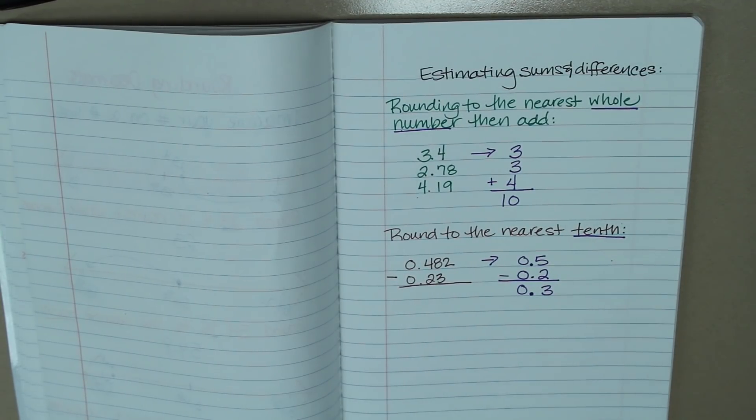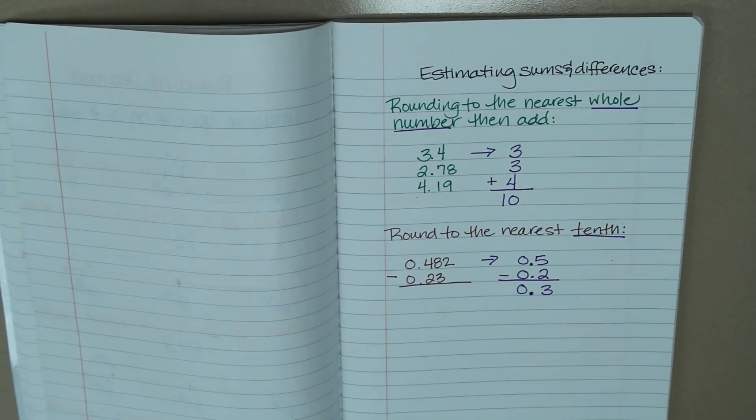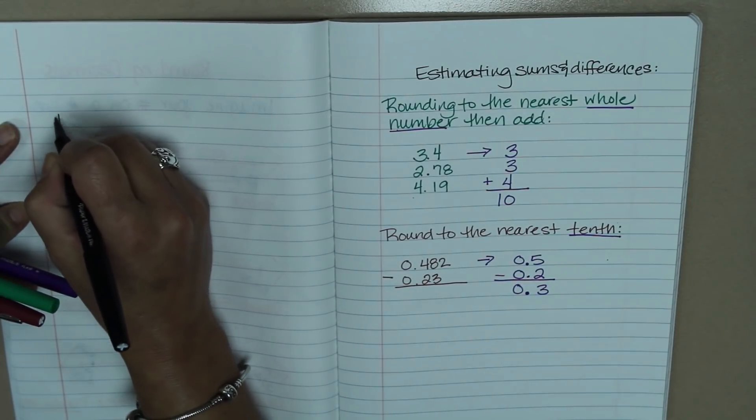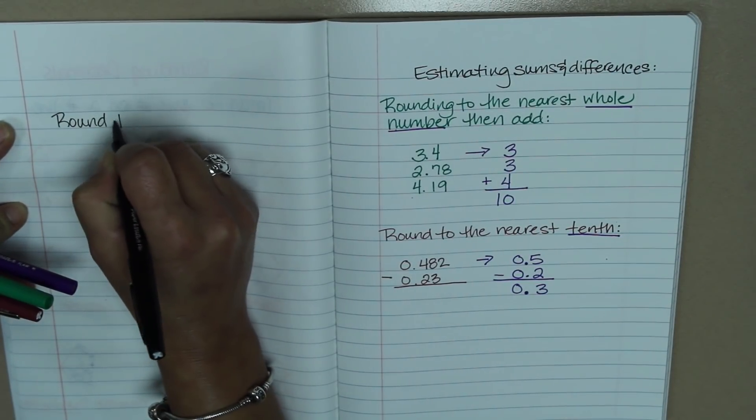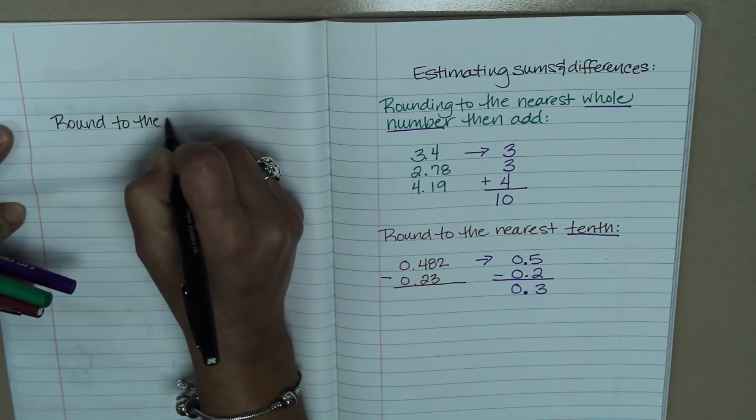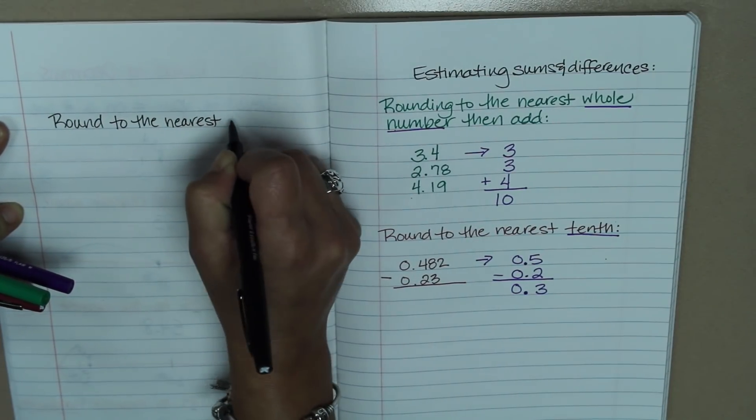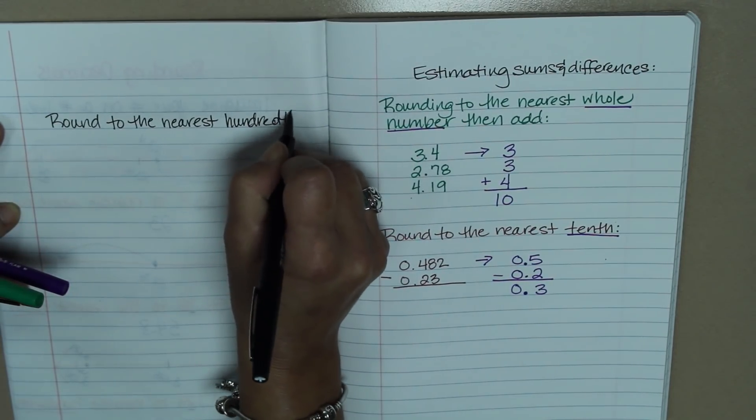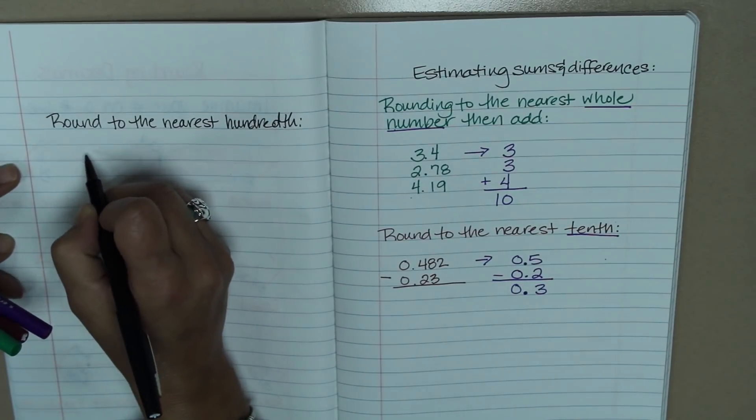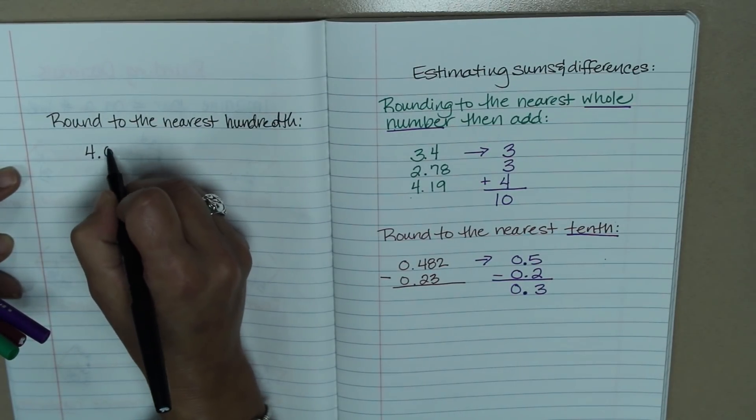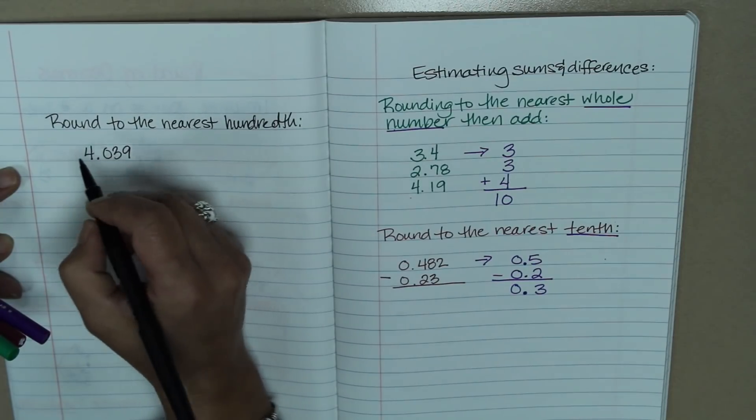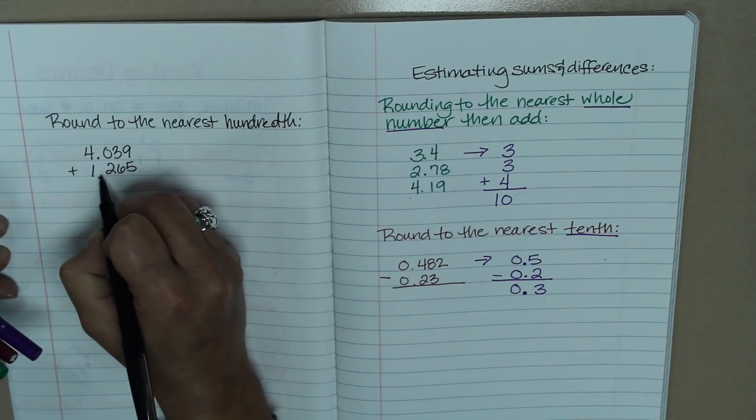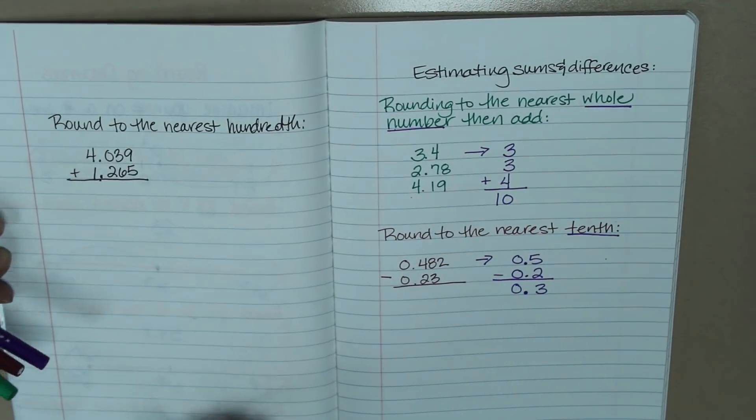So now I want you to try a practice problem and be ready to show your teacher tomorrow. And this one's going to be, I want you to round to the nearest hundredth. This one's going to be a little different. Round to the nearest hundredth, and we'll add on this time. So four and thirty-nine thousandths plus one and two hundred and sixty-five thousandths. Be prepared to show your teacher tomorrow. Good luck.